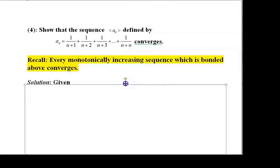First, we will show that the given sequence is monotonically increasing. A sequence is said to be monotonically increasing if aₙ₊₁ is greater than or equal to aₙ for all n belonging to ℕ.